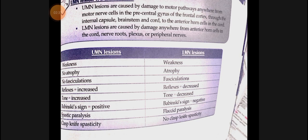In lower motor neuron lesion, everything decreases: reflexes decrease, muscle tone decreases, Babinski's sign is negative, and instead of spastic paralysis, there is flaccid paralysis. Another key difference is atrophy and fasciculations — in upper motor neuron lesion there is no atrophy and no fasciculations, whereas in lower motor neuron lesion, both atrophy and fasciculations are present.